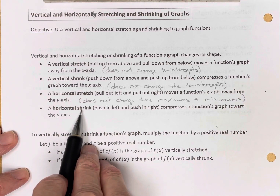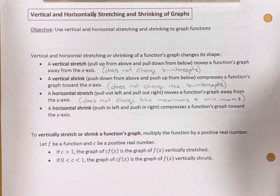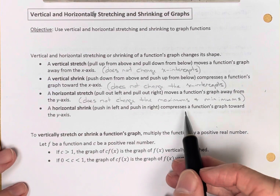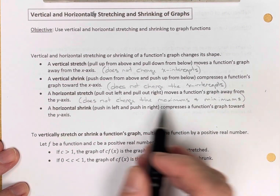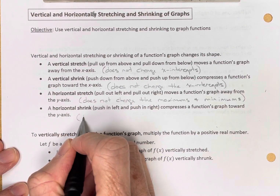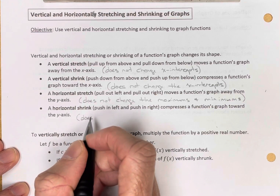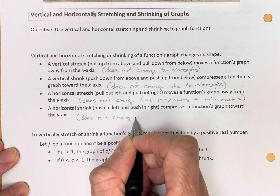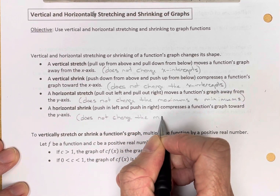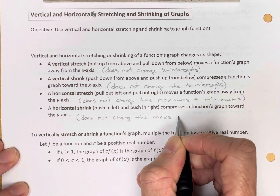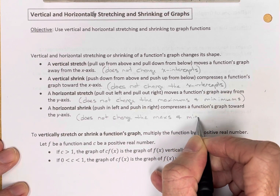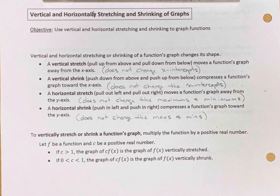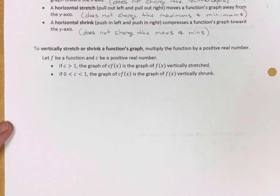A horizontal shrink means we're going to push the graph in from the left and from the right — compressing it toward the y-axis. Again, it's going to change the x-intercepts, but it's not going to change the maxes and the mins. Our highs and our lows will not change. Let's take a look at a couple of examples.